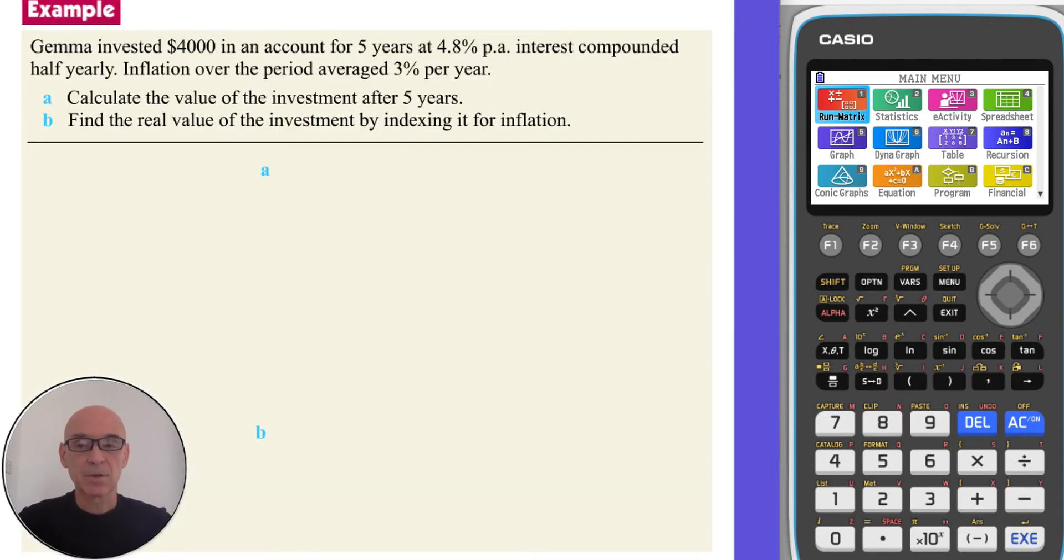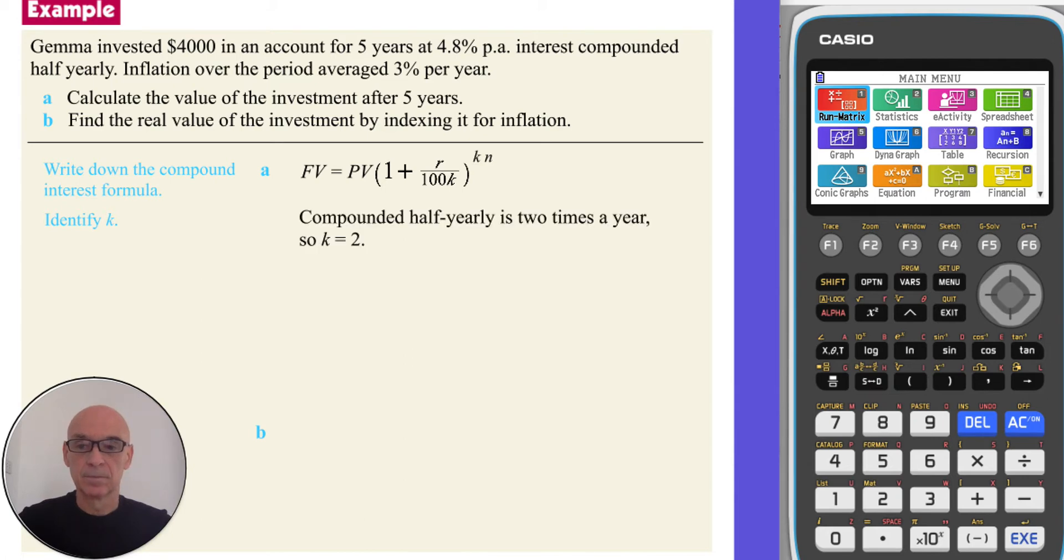In part A of this question, we're asked to calculate the value of the investment after five years. So we begin by writing down the compound interest formula and then identify K, the number of compounding periods in a year. And since the interest is compounded half yearly, that's two times a year, so K equals 2.